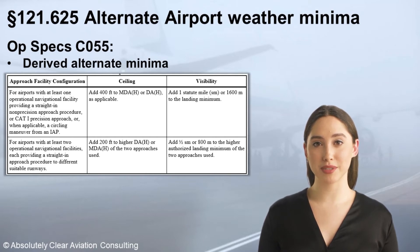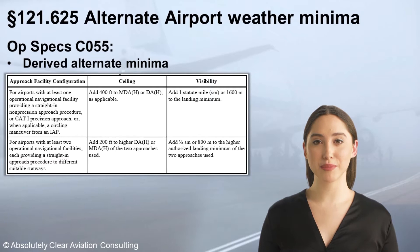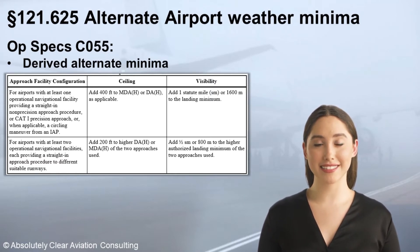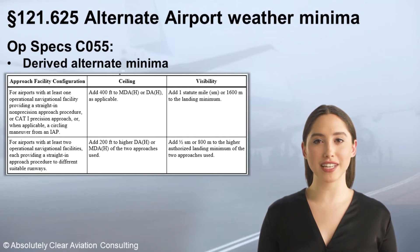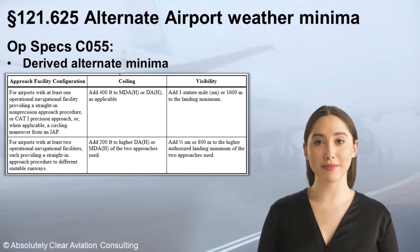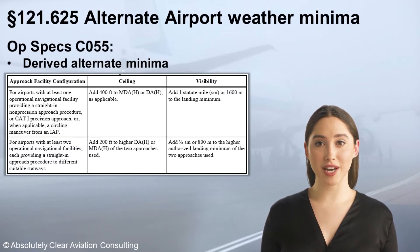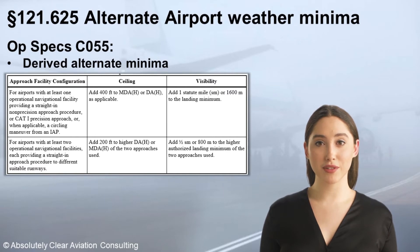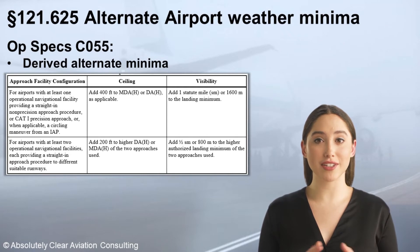The lowest possible minimums under Method 2 would be a 400-foot ceiling and 1 statute mile visibility. Since a typical Category 1 ILS decision height is 200 feet and the visibility is ½ statute mile, if two separate operational navigational facilities to two different suitable runways both have published approach minimums of 200 and ½, then 200 plus 200 equals 400, and ½ statute mile plus ½ equals 1 statute mile.